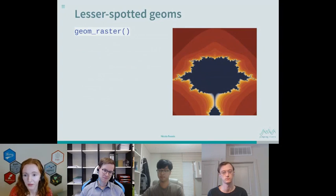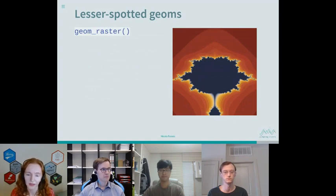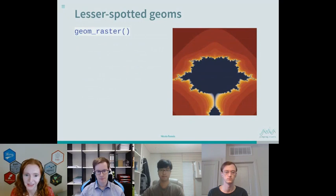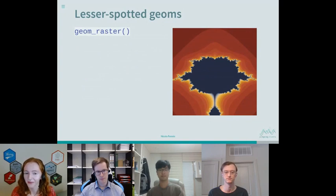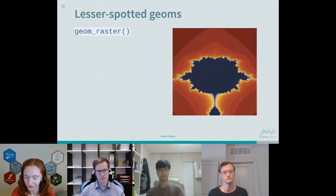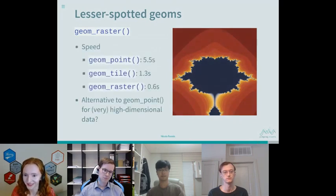Finally, geom_raster. I had used geom_raster before to make heat maps, similarly to geom_tile, with square grids colored by a variable. For fractals-inspired art, the data is calculated iteratively as a series of points. I initially rendered it using geom_point, but it was taking a really long time. I eventually ended up using geom_raster instead, which creates a grid of equally sized rectangles and colors them in. It was so much quicker — 0.6 seconds compared to about five and a half seconds, almost 10 times faster.